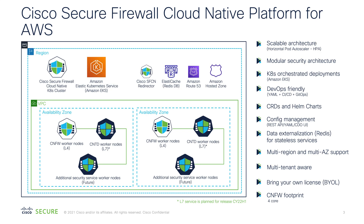In order to answer all these questions, we have created Cisco Secure Firewall Cloud Native for AWS. In our recent release, we have added the solution for Amazon Web Services and it runs on an EKS cluster. You will have your containerized firewall and these firewalls are scalable — it uses horizontal pod autoscaler and can scale up and down as required. This is a modular architecture, meaning you can have L4 capabilities that we have recently added in our Cisco Secure Firewall Cloud Native portfolio, and in the upcoming releases we will be adding CNTDs.